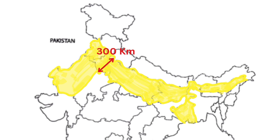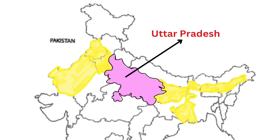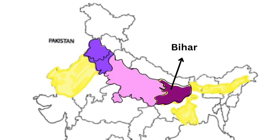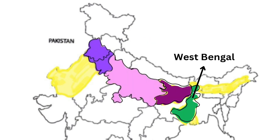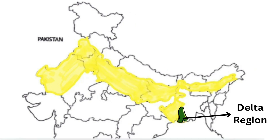The Northern Plains are 2400 kilometers long and its width varies from about 300 kilometers in the west to 150 kilometers in the east. It mainly includes the states of Uttar Pradesh, Punjab, Haryana, Bihar, West Bengal, and Assam delta region.